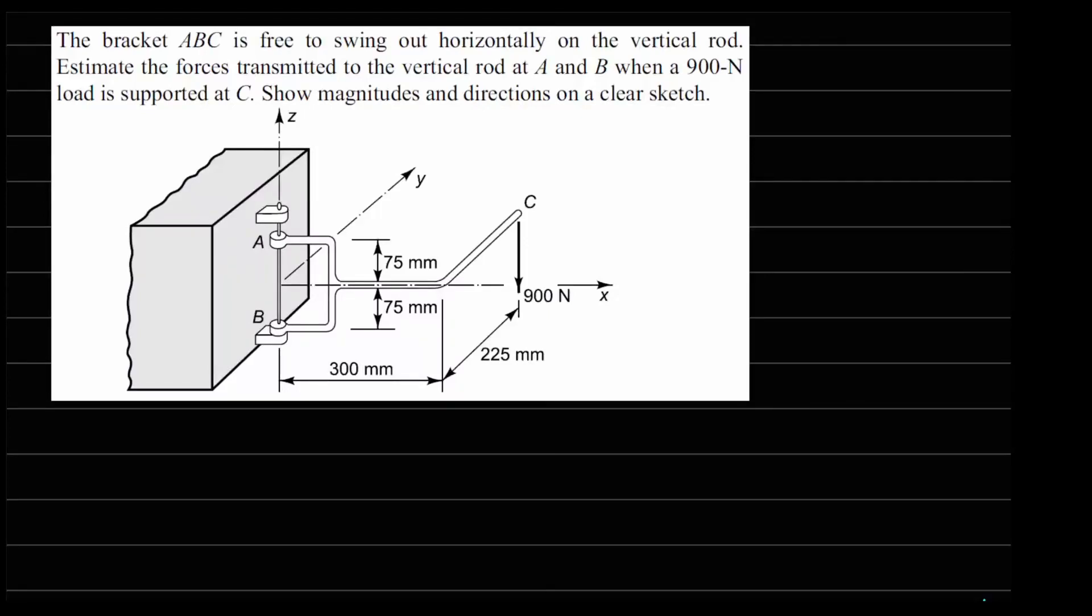This one is problem 1.14. It says the bracket ABC is free to swing horizontally on the vertical rod. Estimate the forces transmitted to the vertical rod at A and B when a 900 Newton load is applied. Show magnitude and direction on a clear sketch.